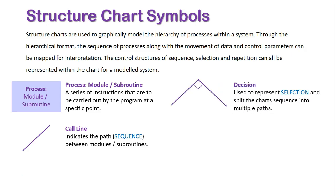Next we have a decision, which is represented by a right angle type symbol which joins the processes together. It's used to represent the selection control structure by splitting the sequence into multiple parts.